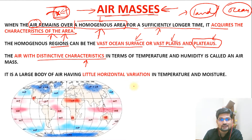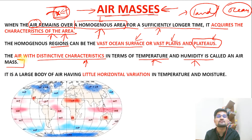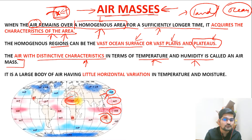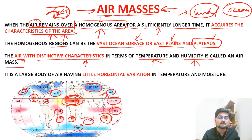In climatology, we define these characteristics in terms of temperature and humidity. That unique parcel of air — that unique mass of air — has a distinctive characteristic which is different from its surroundings. Different regions have different air masses. If you look into this global map, you see different areas have different kinds of air masses, denoted by these codes. For a longer time that air has been in that particular area, so it has acquired the characteristic of that area.